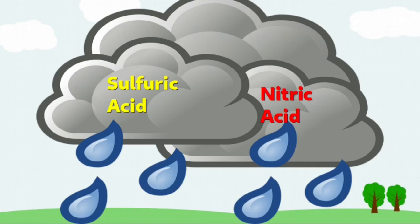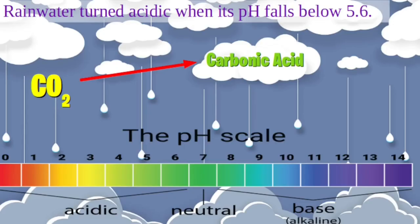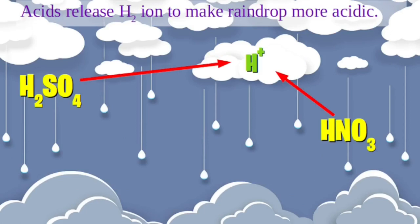Acid rain is only one component of acidic deposition. Acid deposition is the total of wet acidic deposition and dry deposition. Rain water turns acidic when its pH falls below 5.6. In fact, clean or neutral rain water has a pH of 5.6 at 20 degrees Celsius because of the formation of carbonic acid due to dissolution of carbon dioxide in water. Strong acids like sulphuric acid and nitric acid dissolved in rain water dissociate and release hydrogen ions, thereby increasing the acidity in raindrops.